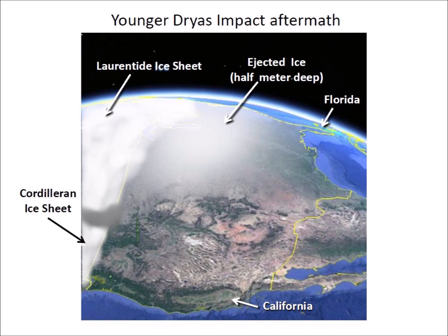all the way from the Rocky Mountains to the east coast of the United States. The ice bombardment left a layer of glacier ice half a meter deep. The onset of a global winter lasting 1,300 years made matters worse and contributed to the extinction of species that had survived through the last glacial maximum 26,500 years ago.